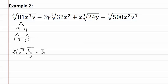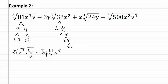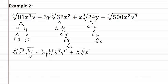In the next term, we have negative three y on the outside, and then we need to find the prime factorization of thirty-two, which would be two and sixteen, two and eight, two and four and two and two — so this makes it the cubed root of two to the fifth x squared. Next, we have an x on the outside and twenty-four on the inside, which gives us the cubed root of two cubed times three times y.